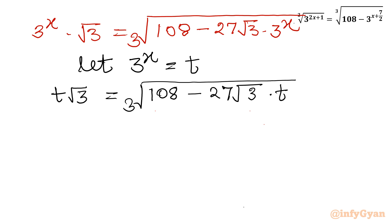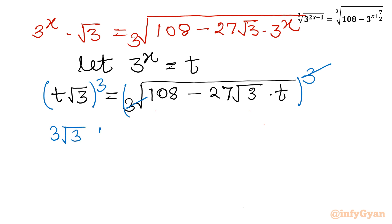Now I will cube both sides. The cube root and power 3 cancel on the right. On the left, t cubed and root 3 cubed is 3 root 3, so I write 3 root 3 t cubed. The right hand side becomes 108 minus 27 root 3 times t.